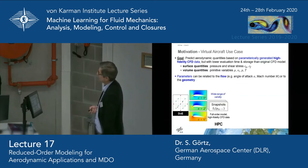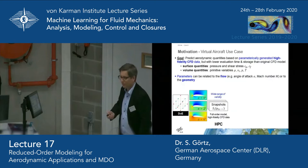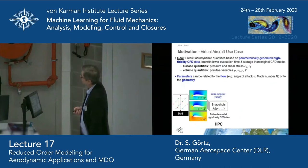That's the motivation for us to look into faster methods — things like lower-fidelity methods — but also trying to build reduced order models out of high-fidelity data. The challenge is to compute as little data as needed. The goal is to predict all aerodynamic quantities based on parametrically generated high-fidelity data from CFD or CFD-CSM computations, hoping these models have lower evaluation time and lower memory storage than the original CFD. The quantities of interest are pressure and shear stress distributions over the aircraft surface, but also volume quantities — the primitive variables: pressure, velocities, or temperatures.